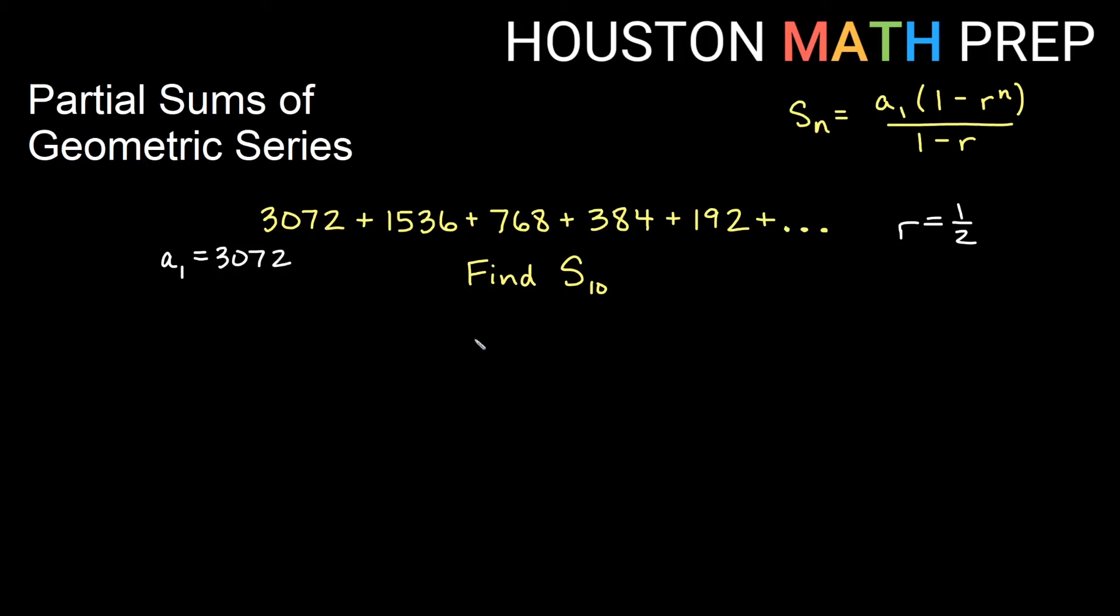And I want 10 terms, so my n is 10. So the sum of the first 10 terms is going to be 3072 times 1 minus r to the n, which is 1 half to the 10, all over 1 minus r. In other words, 1 minus half. If it helps you when you're plugging these into the calculator, if you want to go ahead and compute the bottom so you don't have to use quite as many parentheses, that might help a little bit. And for this one, we get an answer of 6138.